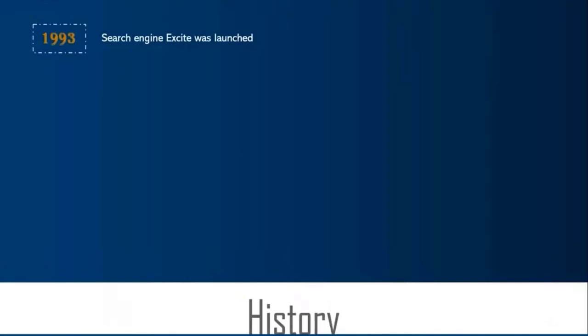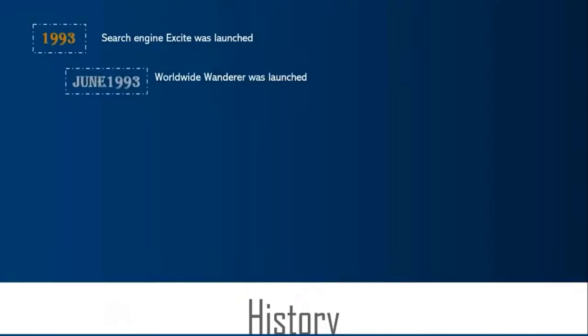In 1990, the first search engine called Archie came up, keeping an index of file lists of all public FTP servers. Excite came from the project Archie Text, started in February 1993 by Stanford undergrad students who used statistical analysis of word relationships to make searching more efficient. In June 1993, Matthew Gray introduced the World Wide Web Wanderer. By December 1993, there were three full-fledged bot-fed search engines: JumpStation, the World Wide Web Worm, and the RBSC Spider.